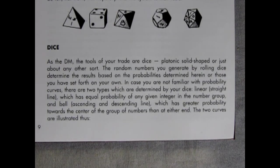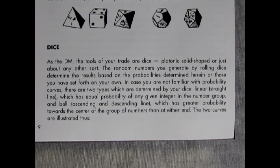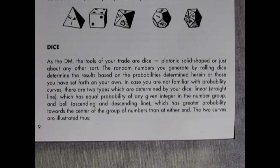In case you are not familiar with probability curves, there are two types which are determined by your dice. Linear, straight line, which has equal probability of any given integer in the number group. And bell, ascending and descending line, which has greater probability toward the center of the group of numbers than at either end. The two curves are illustrated thus.